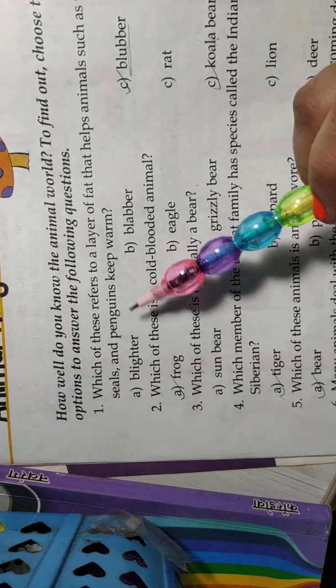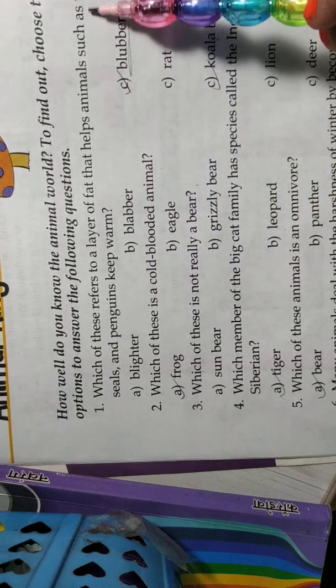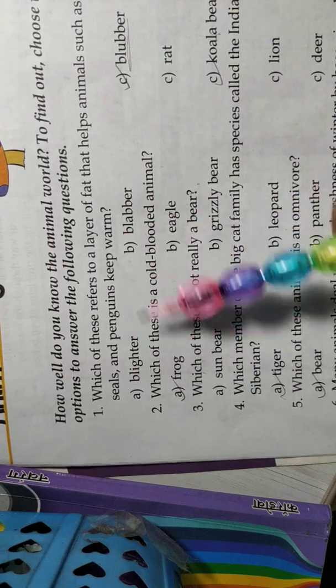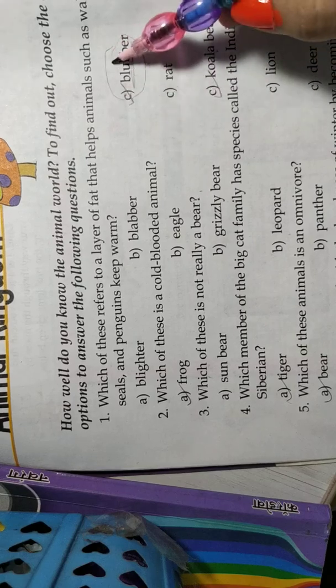First is, which of these refers to a layer of fat that helps animals such as walrus, seal and penguins keep warm, blighter, blabber, blubber. Blubber is the correct answer.